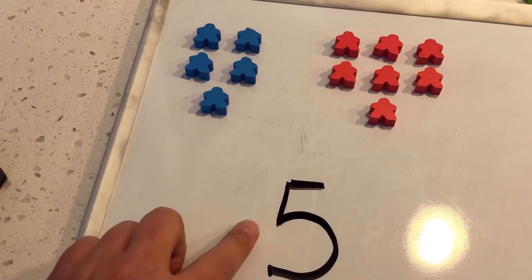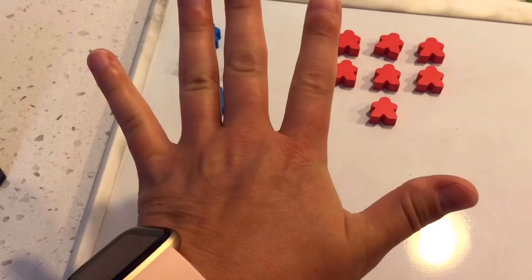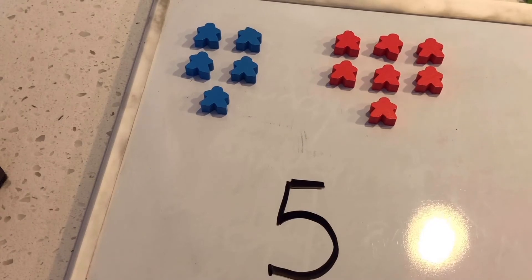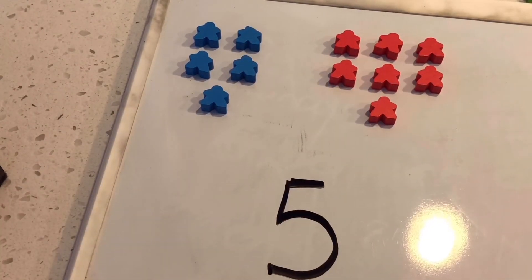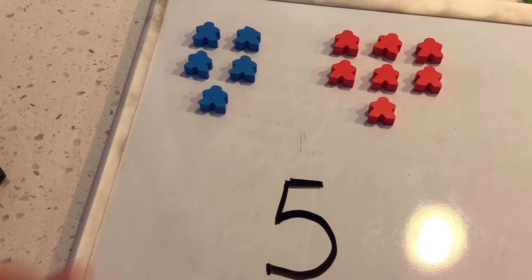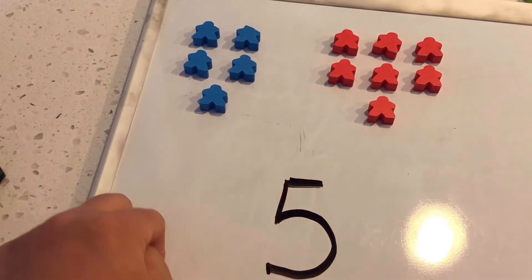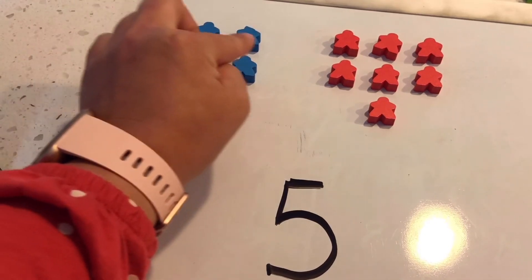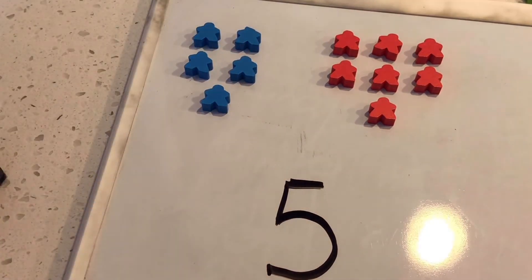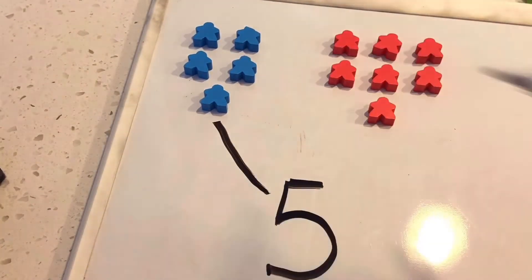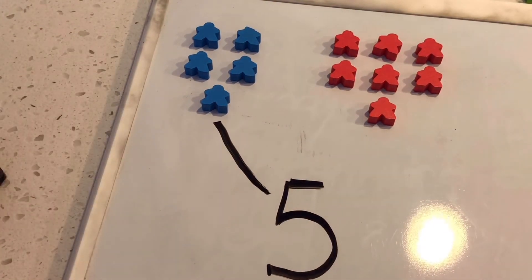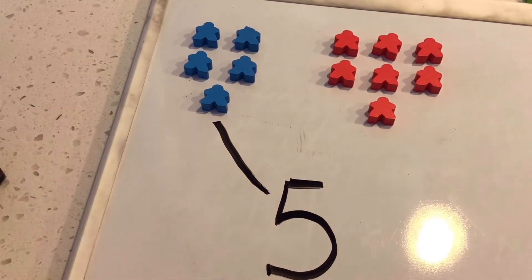Next we have the number 5. Which group do you think has 5? This group looks littler than that group. Let's start here. 1, 2, 3, 4, 5. You got it. So we know that 5 is the right quantity, the right number to go with this one.